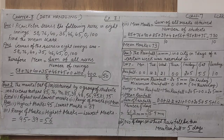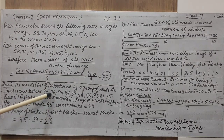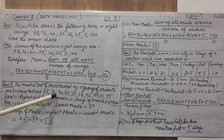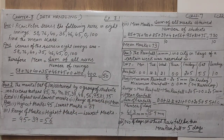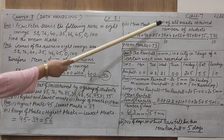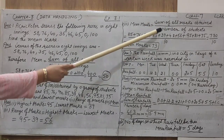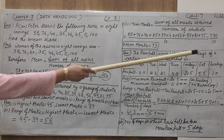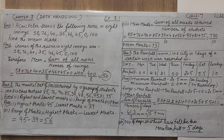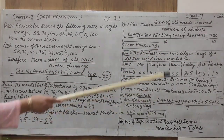Sum of all the marks: 85 + 76 + 90 + 85 + 39 + 48 + 56 + 95 + 81 + 75. The calculation must be correct. The total sum of these marks is 730, divided by the number of students. Counting the students: 1, 2, 3, 4, 5, 6, 7, 8, 9, 10 — there are 10 students. So mean = 730 ÷ 10 = 73.